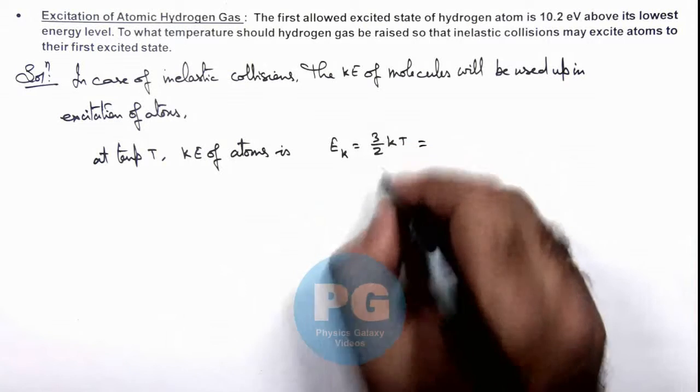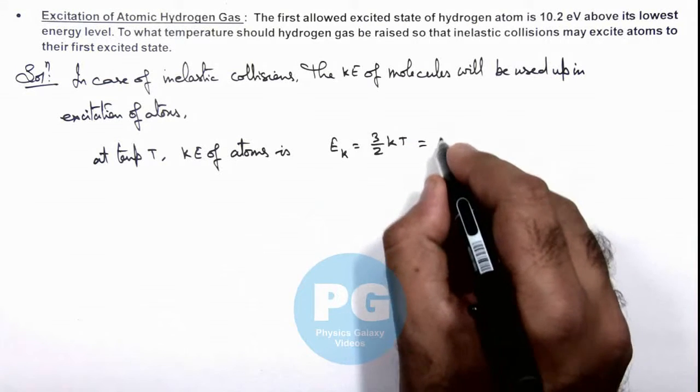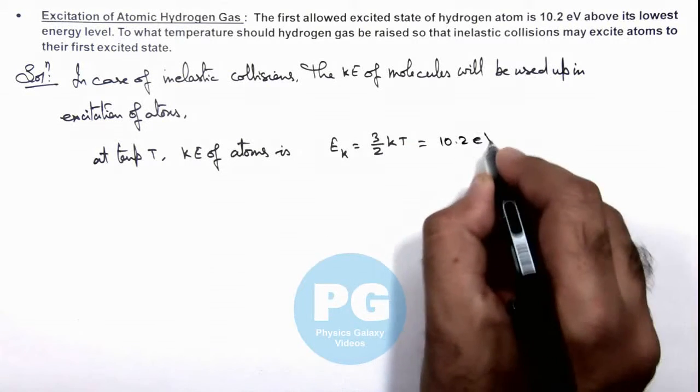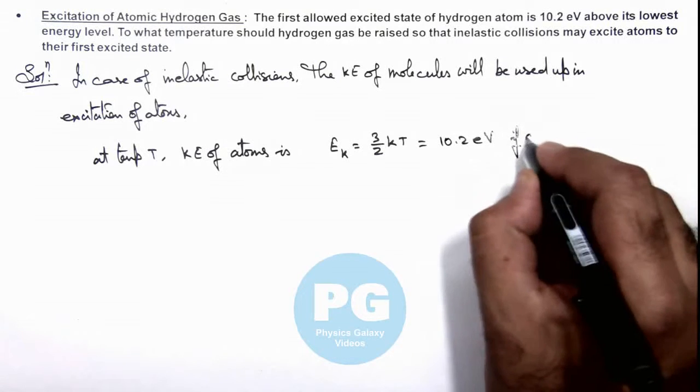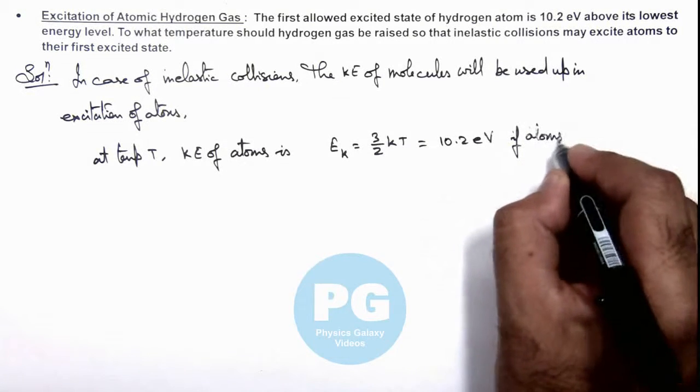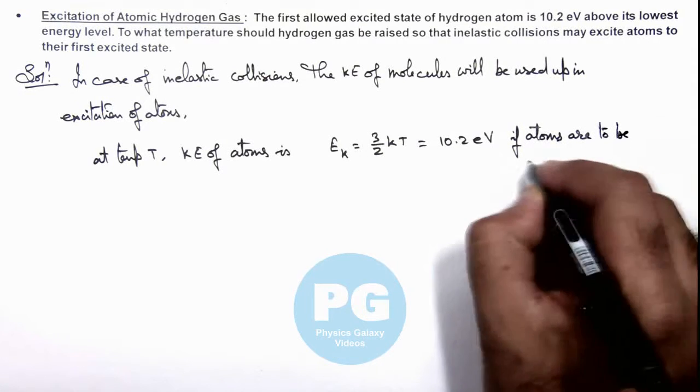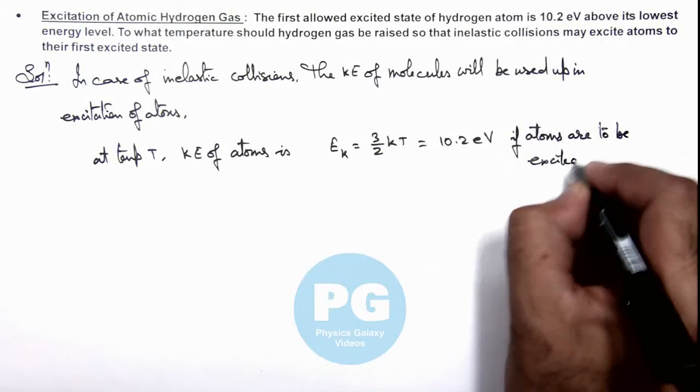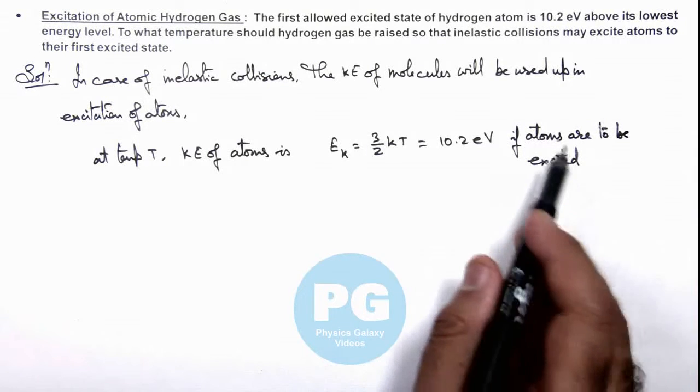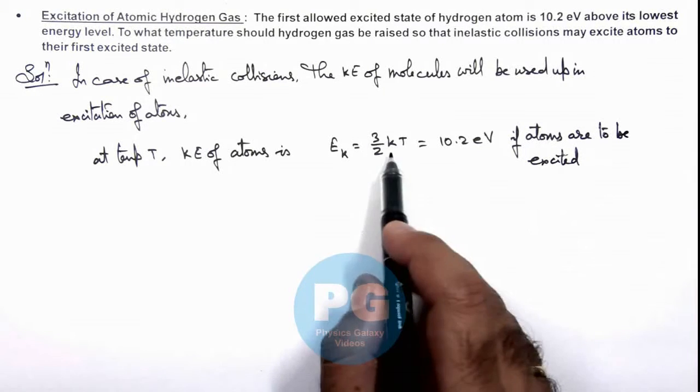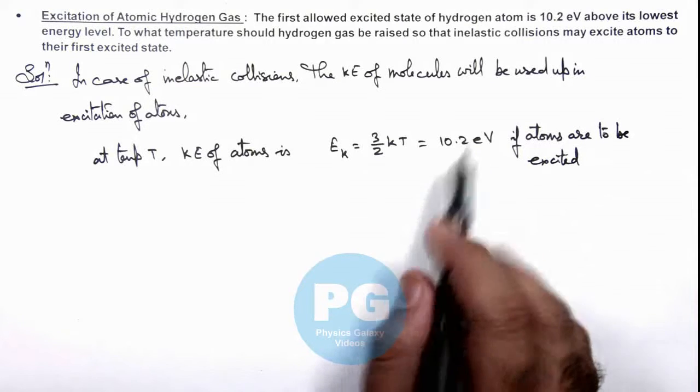So this can be written as 10.2 electron volts if atoms are to be excited. Then only atoms will excite if their thermal kinetic energy is equal to the excitation energy.